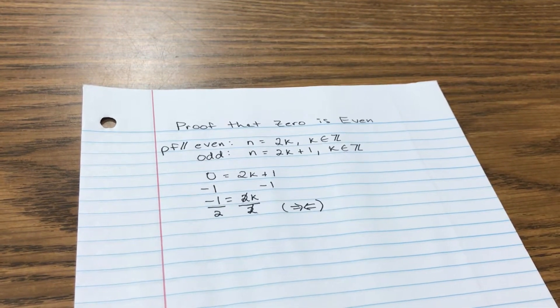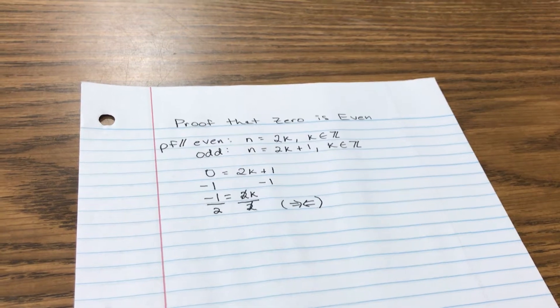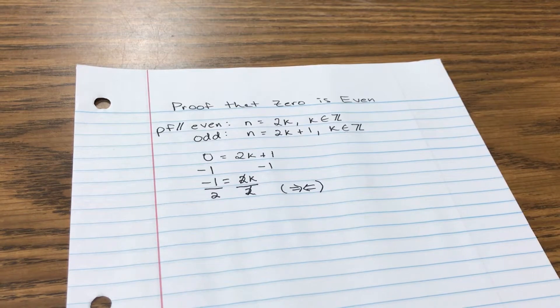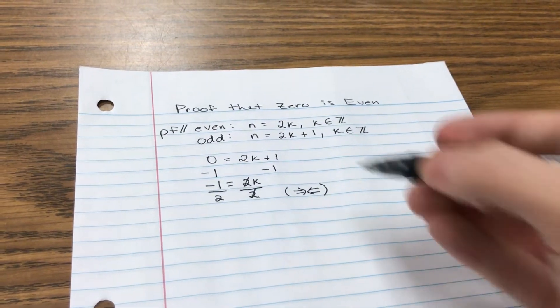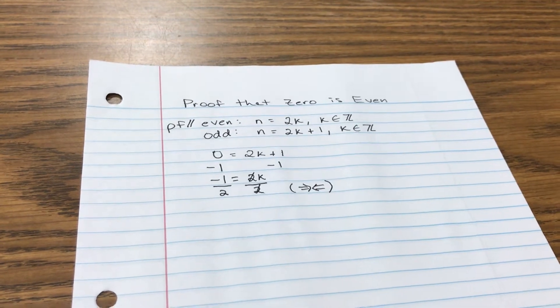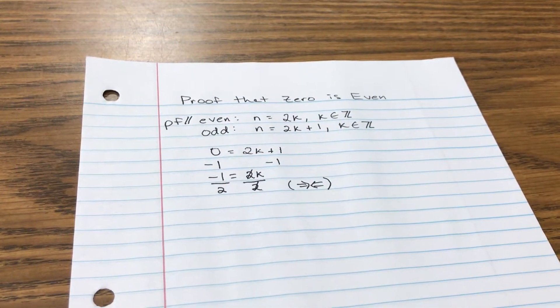I draw these two arrows that meet each other in the middle to say that hey, I've reached my contradiction. So that means that 0 must not be odd like we assumed. 0 must be even.